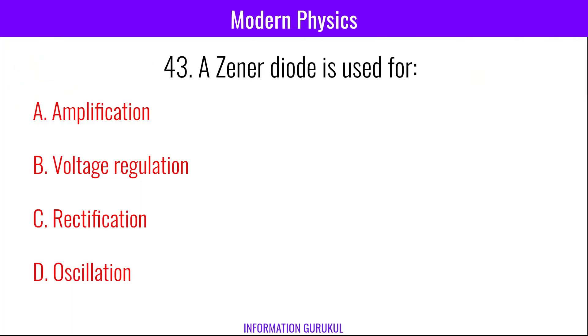A zener diode is used for voltage regulation.